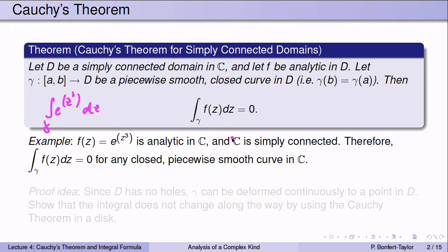e to the z cubed is analytic in C — the whole complex plane — which is simply connected. Therefore we can apply Cauchy's theorem with D being the entire complex plane, and find that the integral over gamma of F of z dz is equal to zero for any closed piecewise smooth curve in C. More generally, if you have any function analytic in C, the integral over any closed curve is always going to be zero.